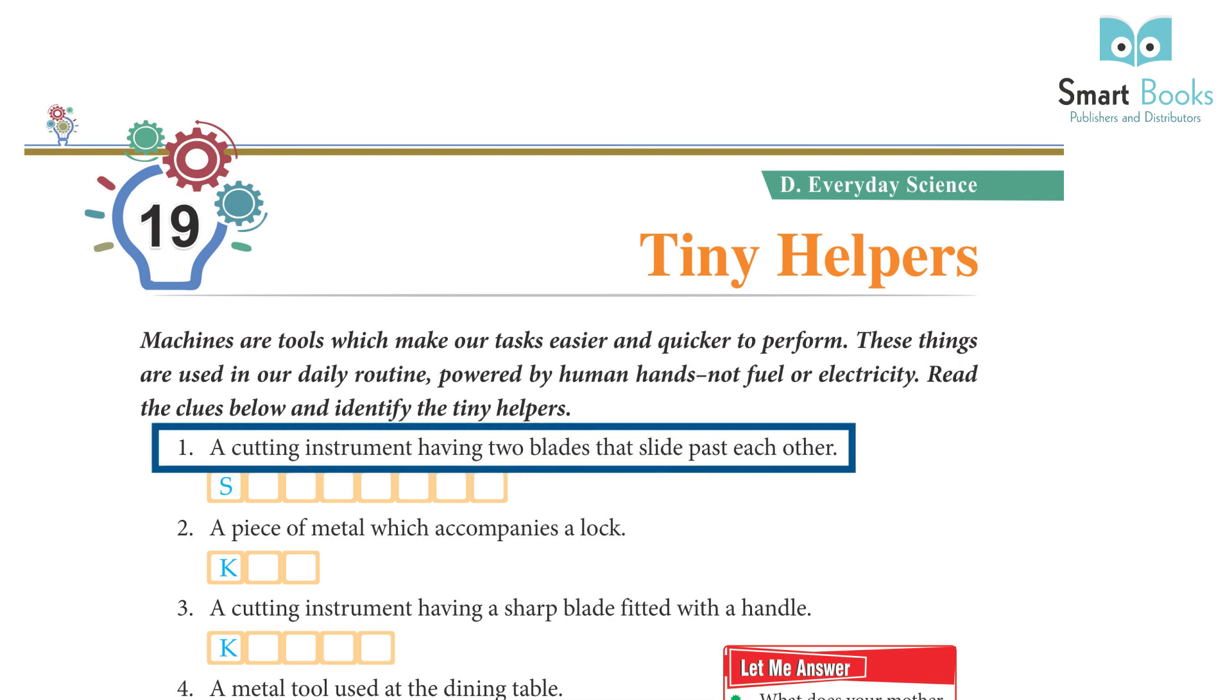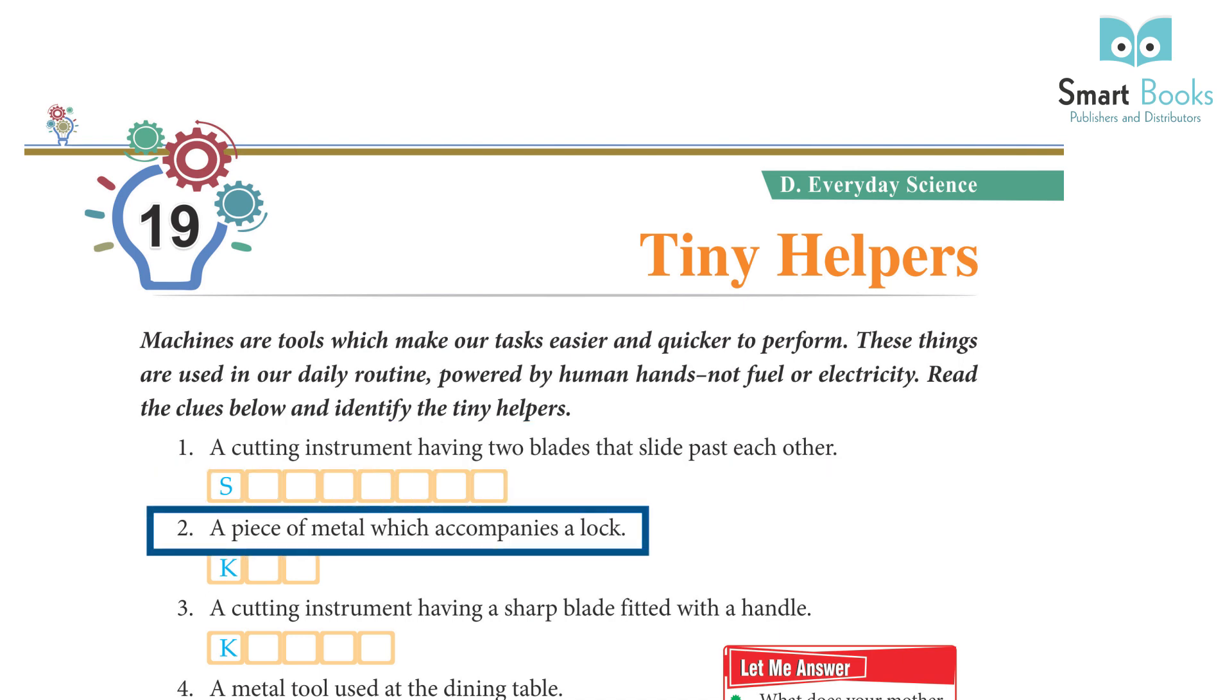1. A cutting instrument having two blades that slide past each other. Scissors. 2. A piece of metal which accompanies a lock. Key.